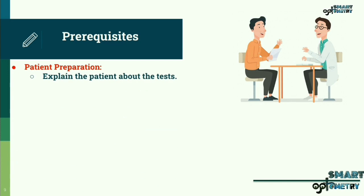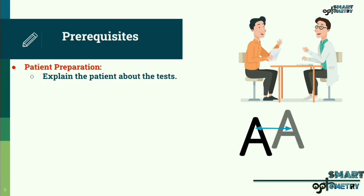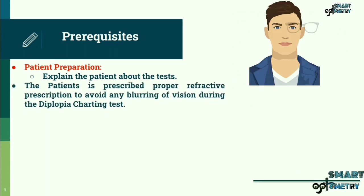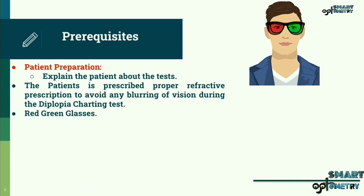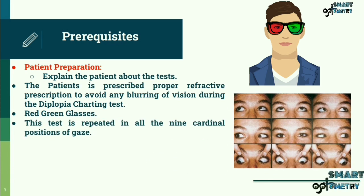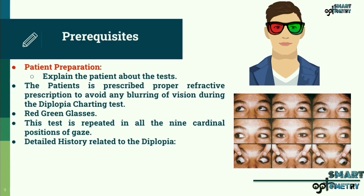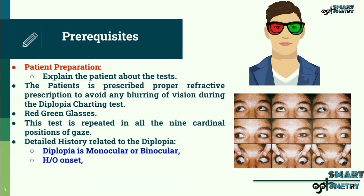Patient preparation: Explain to the patient about the test, because it is a method in which the subjective deviation is recorded by asking the subject to quantify the separation between the double images. The patient is prescribed a proper refractive correction to avoid any blurring of vision during the test. Red-green glasses are required. The test is repeated in all nine cardinal positions of gaze and can be performed after taking a detailed history, including whether the diplopia is monocular or binocular, history of onset, frequency, duration, and the time of day when the diplopia is worst.